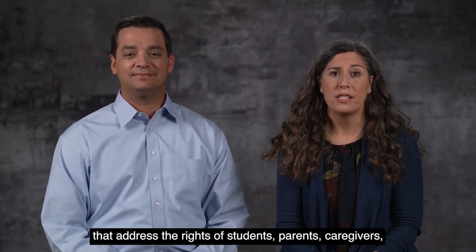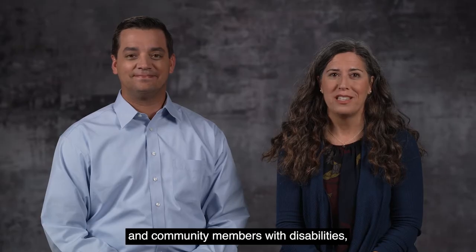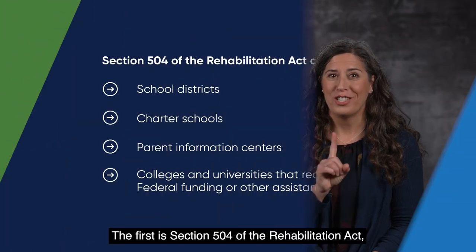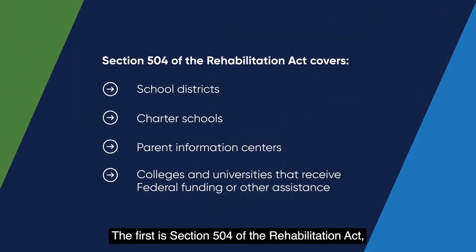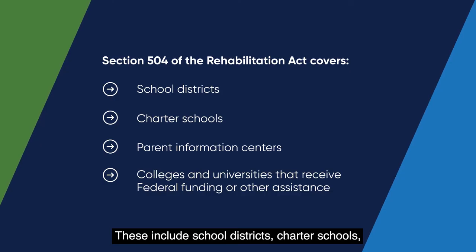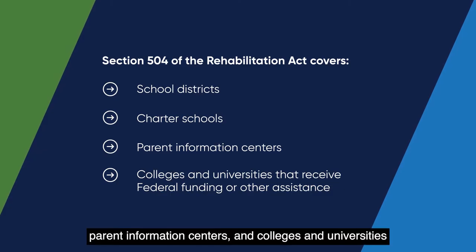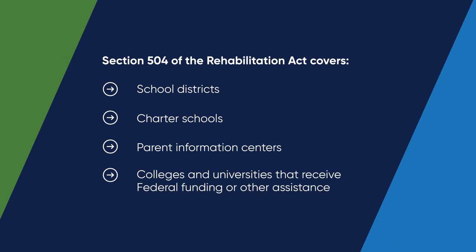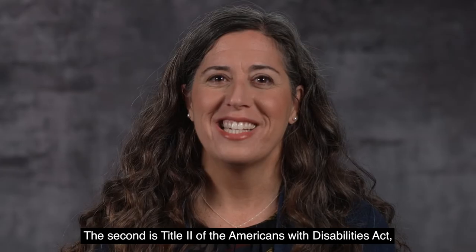The U.S. Department of Education's Office for Civil Rights helps enforce two civil rights laws that address the rights of students, parents, caregivers, and community members with disabilities, with a focus on ensuring access to educational institutions, services, programs, or activities. The first is Section 504 of the Rehabilitation Act, which covers recipients of federal funding — these include school districts, charter schools, parent information centers, and colleges and universities that receive this funding or other assistance from the U.S. Department of Education.